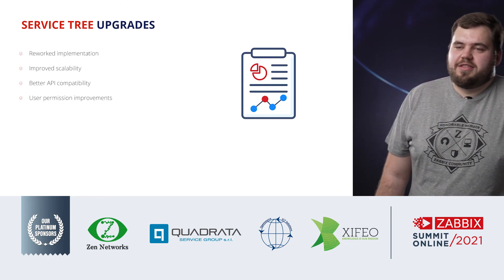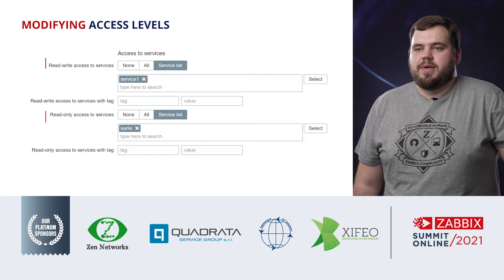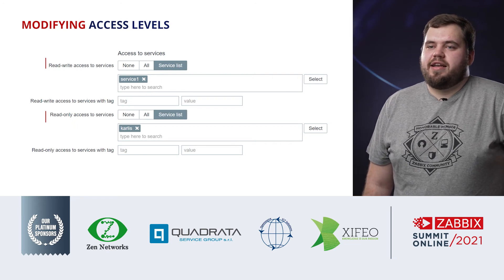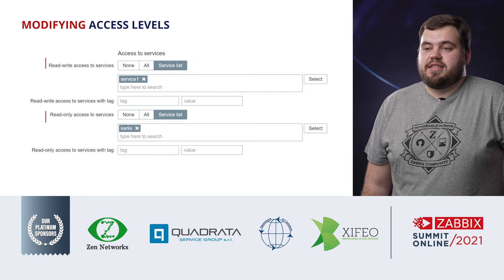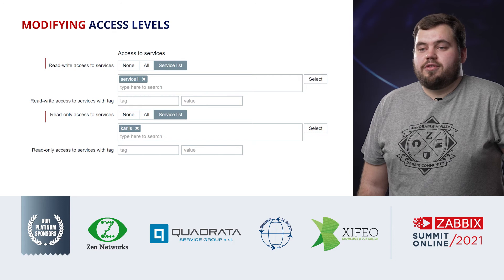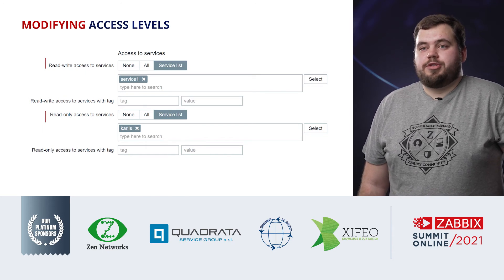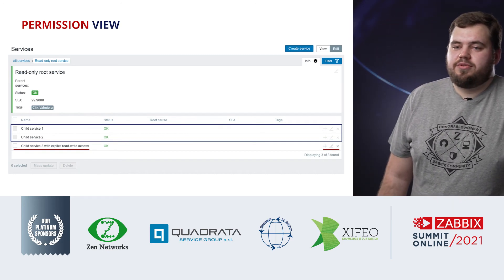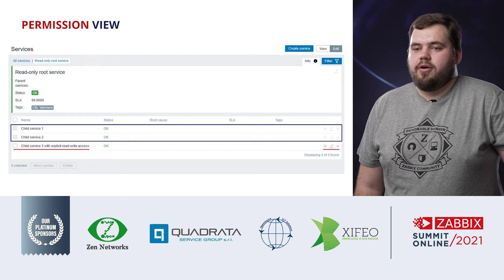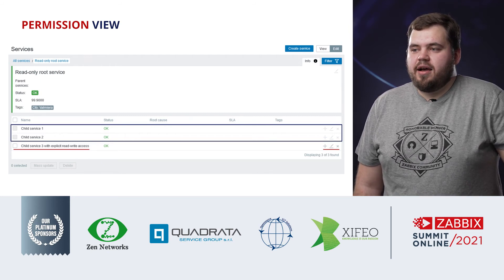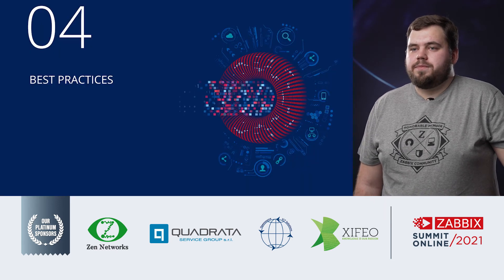There are a lot of improvements in the service trees — another presentation covers more in-depth features, but here I'll talk about user permission improvements. Now you can give modified access levels to services via user groups — read/write or read-only access — because before it was either do everything or do nothing. On screen you can see three child services, from the perspective of a user who only has access to the third one: you can read the first two exist and see the data, but you can only modify the third one.